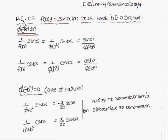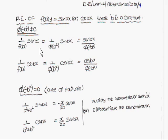Today we are going to discuss the particular integral of f(D)y = sin(bx) or cos(bx), where b is a constant. There are two cases: first, φ(-b²) ≠ 0, and second, φ(-b²) = 0. The difference is that you replace D² with -b² in the denominator. If it is not equal to 0, that gives the solution directly. If it is equal to 0, you multiply the numerator with x and differentiate the denominator. We will discuss this concept through examples.